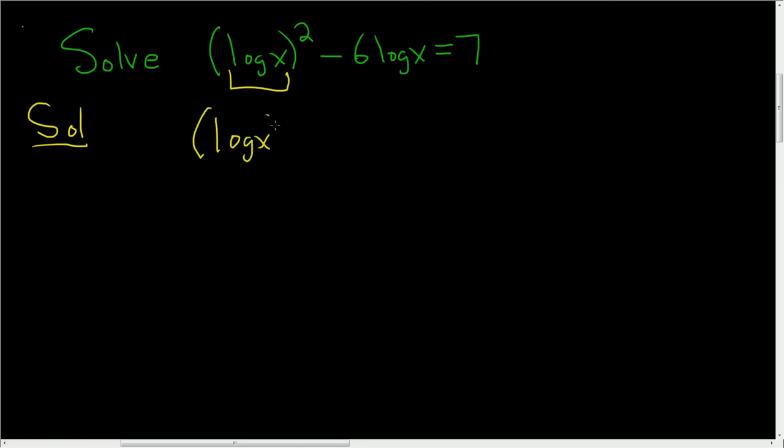So log x squared minus 6 log x. And we'll subtract 7 from both sides. So minus 7 equals 0.